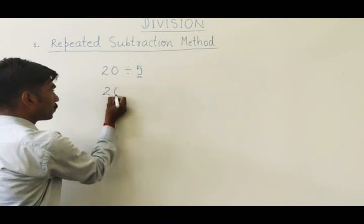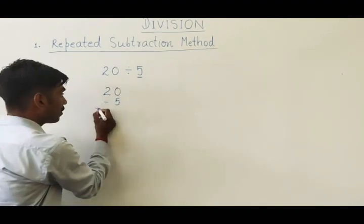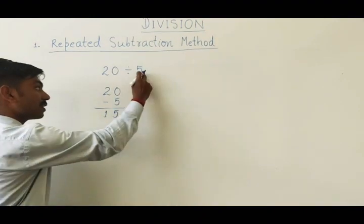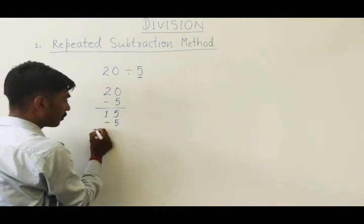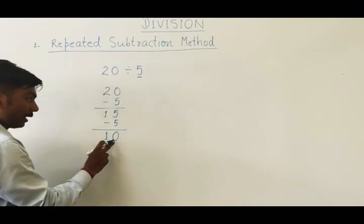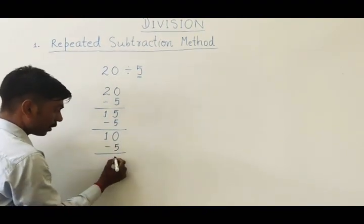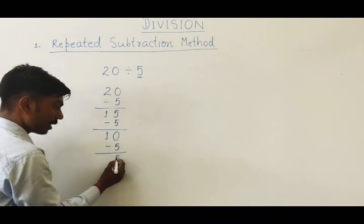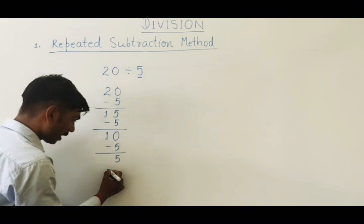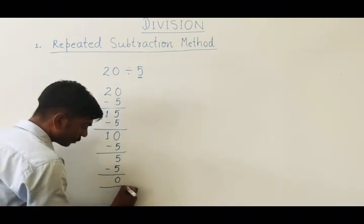So first subtract 5 from this 20. So what we get? 15. Again subtract this 5, keep on subtracting this number until we reach zero. Next if we subtract 5 from 15 we will get 10. Next if we subtract 5 from 10 we will get 5. Till now we have not reached zero. Subtract once more. And now we have got zero.